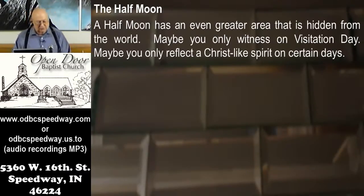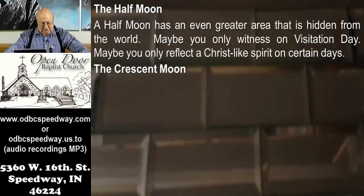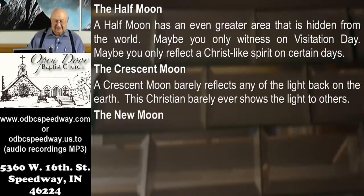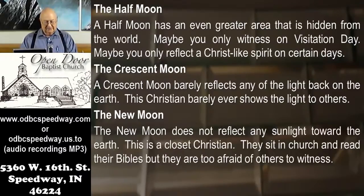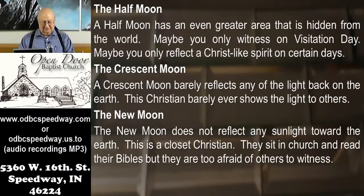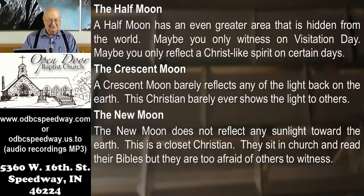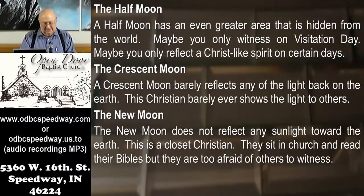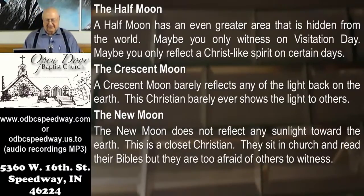Then there's the crescent moon — almost all dark — which barely reflects any light back to the earth. This is the Christian that barely ever shows the light to others. There's also the new moon, where it doesn't reflect any light at all. If you're looking carefully on a clear night, you can see it's there, but it's not reflecting any light. This is the closet Christian — not the one who goes to the closet to pray, but the one who has not revealed himself to be a Christian. What do people say at school when you tell them you're a Christian? Nobody knows. Don't be that way. They sit in church and read their Bibles, but they're too afraid to witness to others. We don't want to be the new moon kind of Christian — we want to be more and more the full moon.